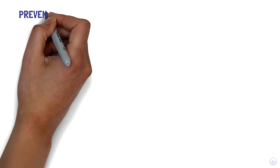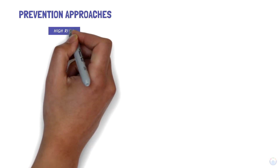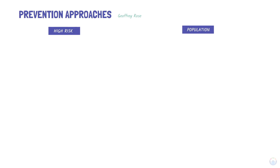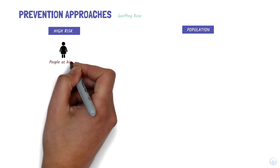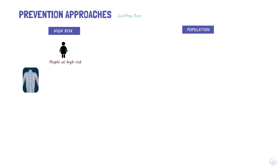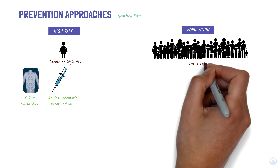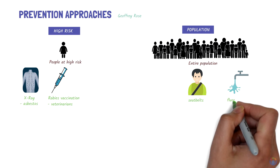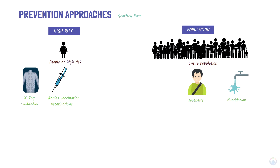With prevention, there are two broad approaches: the high-risk or targeted approach, and the population or universal approach. These were highlighted by the work of an epidemiologist, Jeffrey Rose. In the high-risk approach, prevention activities are selectively targeted to people who are at high risk of a disease. For example, doing a screening x-ray for someone who has worked with asbestos, or providing rabies vaccinations to veterinarians. In the population approach, prevention activities are used for the whole population to reduce the overall level of risk. For example, seat belt laws or fluoridation of water. Sometimes both approaches can be used.